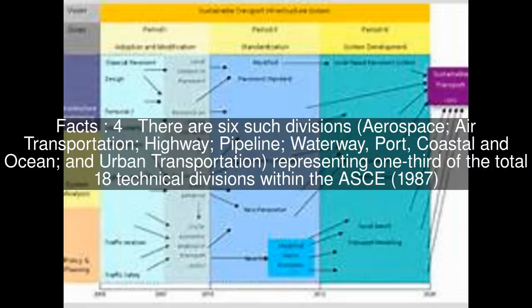There are six such divisions: Aerospace, Air Transportation, Highway, Pipeline, Waterway, Port, Coastal and Ocean, and Urban Transportation, representing one-third of the total 18 technical divisions within the ASCE.